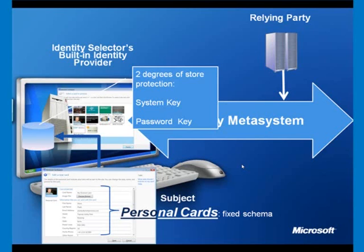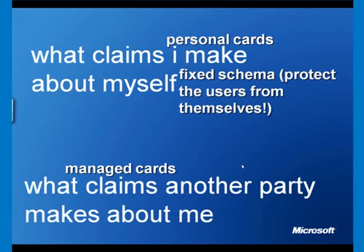So there are two types of cards. Managed cards come from identity providers. Personal cards come from the built-in identity provider in the identity selector software. Personal cards contain claims that I make up about myself, while managed cards are claims that another party makes about me — and they have a flexible schema.